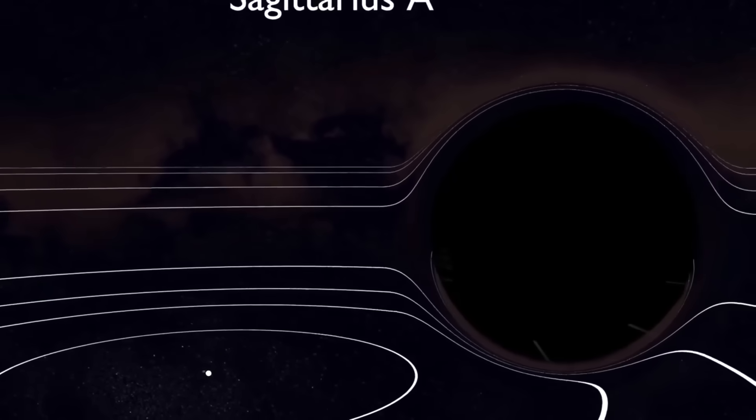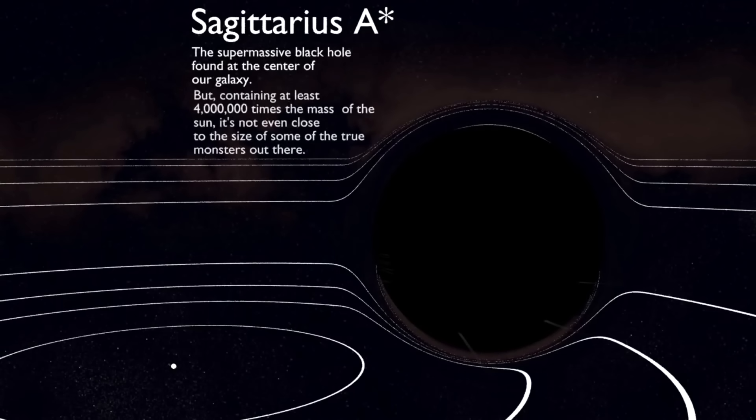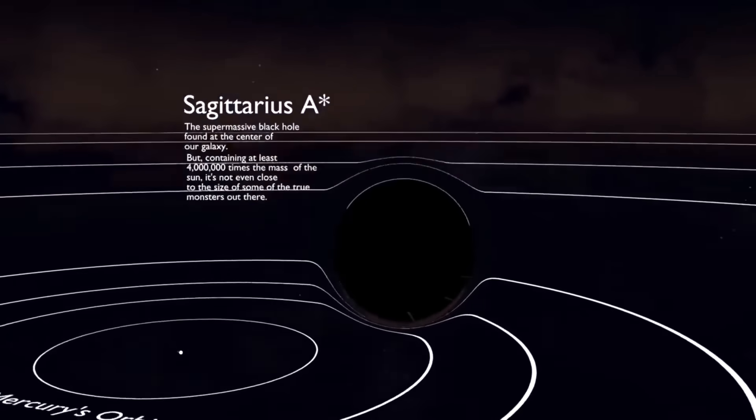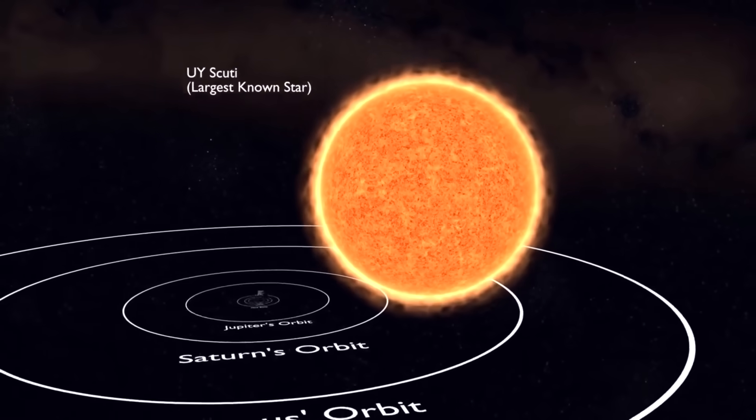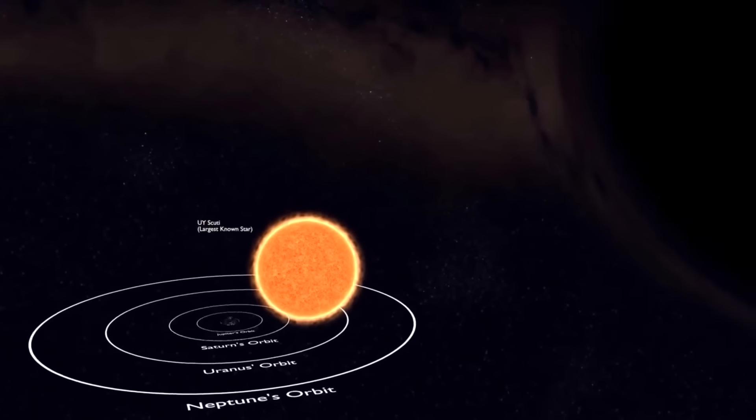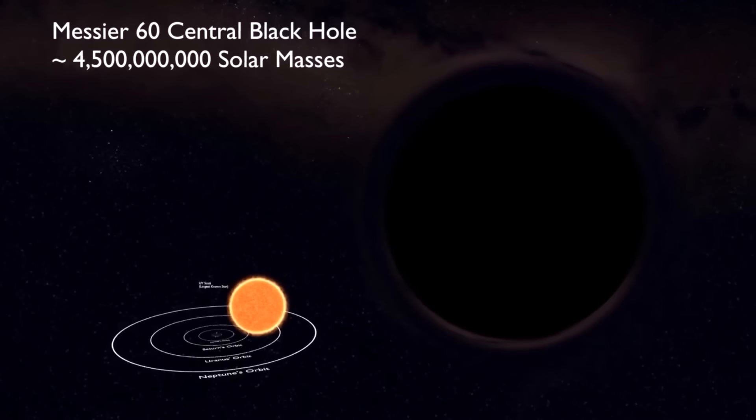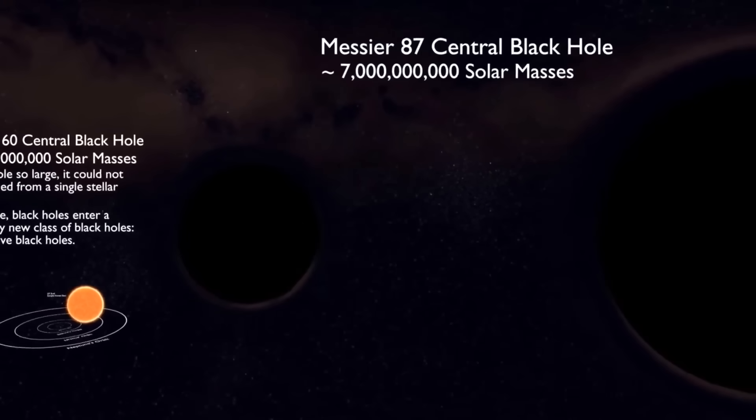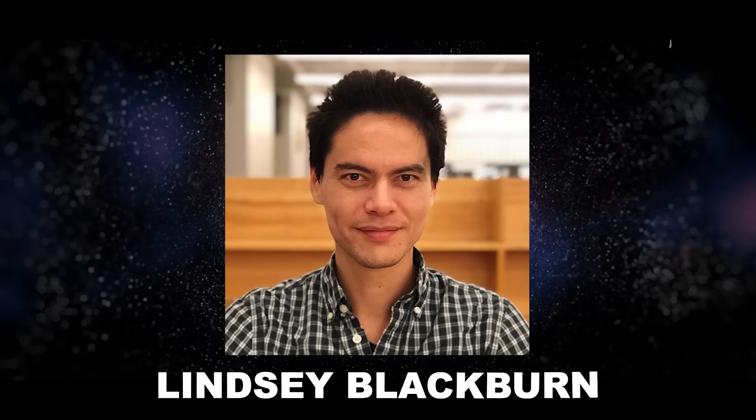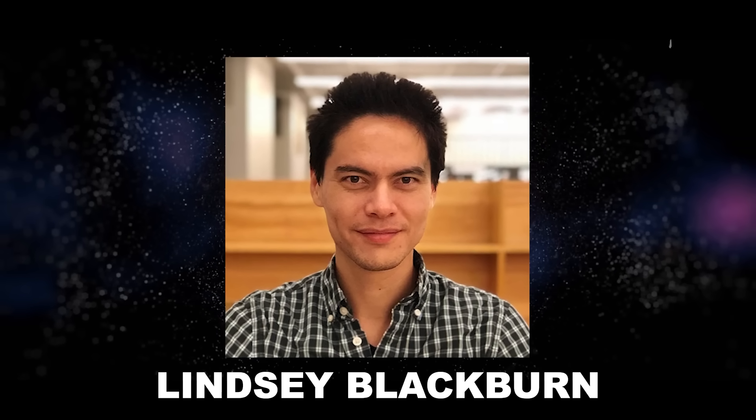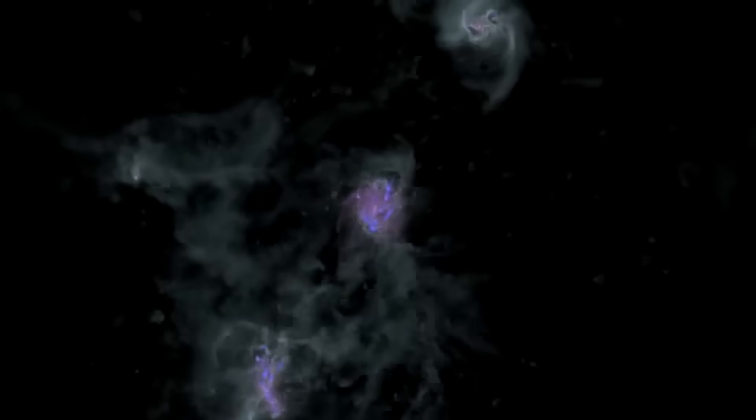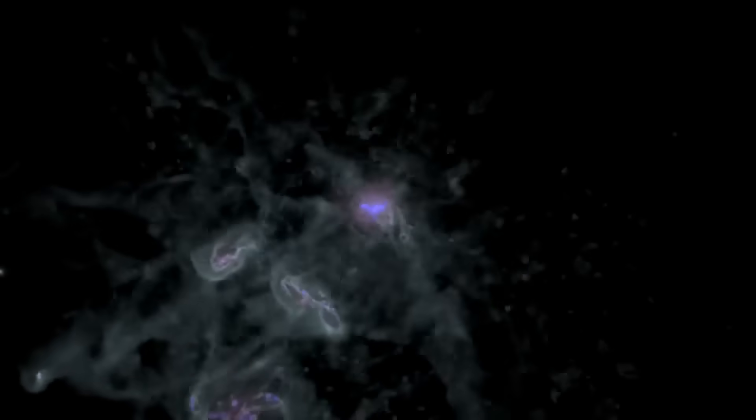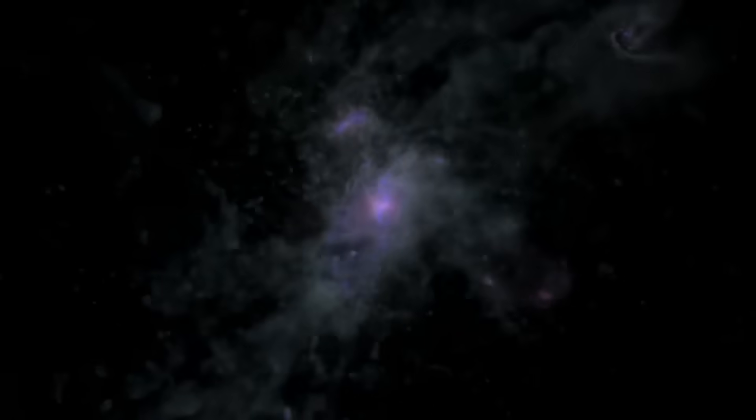Despite being far closer to our solar system than M87, Sagittarius A proved more challenging to photograph. The innermost solar orbit of Mercury would contain Sagittarius A, which has a diameter of nearly 17 times that of our Sun. On the other hand, M87's diameter would cover the entire solar system. According to radio astronomer Lindsay Blackburn of the Harvard Smithsonian Center for Astrophysics, Sagittarius A's lower physical size also implies that everything changes around 1,000 times more quickly for Sagittarius A than for M87.